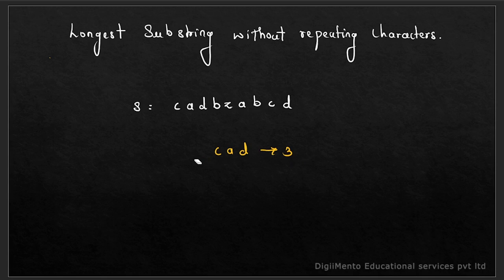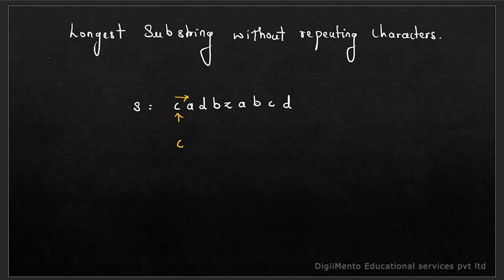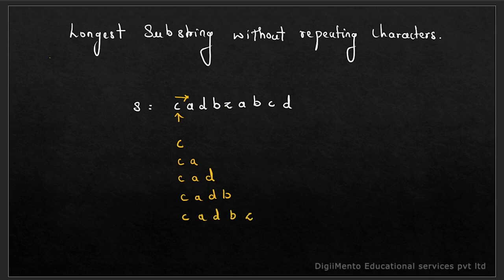Let's start with C — this is a unique character, so it can be a substring. We move in this direction and add characters one by one: C, then C-A, then C-A-D, then C-A-D-B, then C-A-D-B-Z. Up till here everything is fine — no one is repeating. C is unique, A is unique, D is unique, B is unique, Z is also unique.